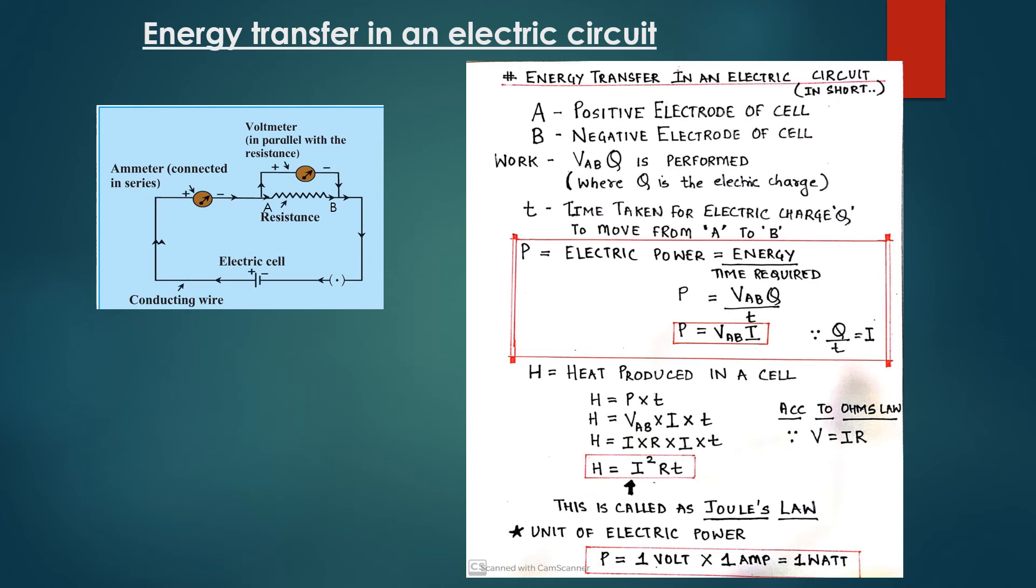The source of energy, the cell, gives energy in time T. The energy P into T goes to the resistor, and the heat produced in the resistor is given by H is equal to P into T, which equals VAB into I into T.